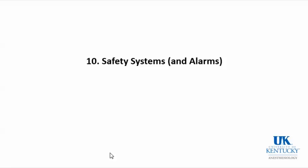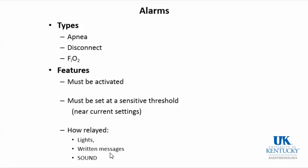Another key word is safety systems or alarms. We have several kinds: apnea alarms, disconnect alarms, and inspired oxygen alarms. What's important is that they need to be activated. The default on our machines now is to have the alarms turned off — which I find problematic. They should be on. You may say you're always watching, but attention can be directed elsewhere, so I think it's important that alarms are active.